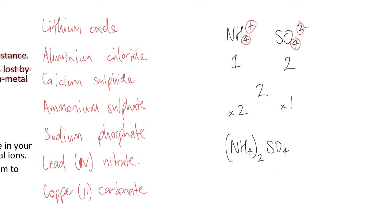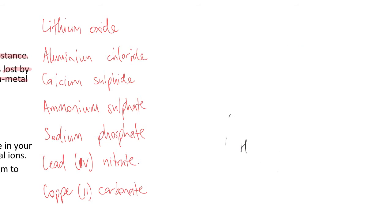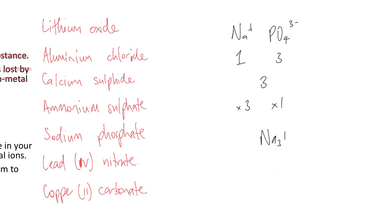Let's try sodium phosphate. Sodium is 1+ and phosphate is PO₄³⁻. Magnitude 1 and magnitude 3 — lowest common multiple is 3. I times the 1 by 3 and the 1 by 1, so therefore the ratio gives Na₃PO₄.